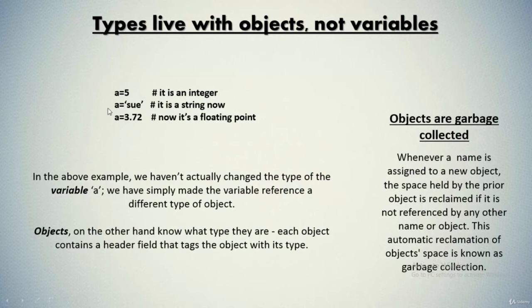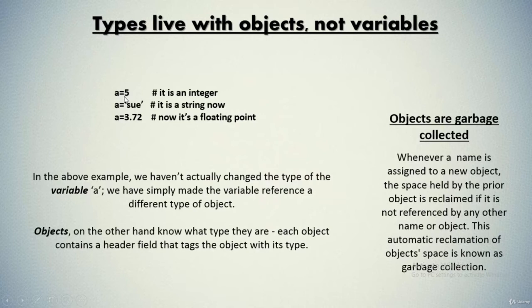How does garbage collection happen here? First we assign the value 5 to variable 'a', then we assign a string value to variable 'a'. As soon as we assign a different object to this variable, the prior object is automatically reclaimed and replaced by the newly created object — that is called garbage collection. The prior object works as garbage and is automatically collected in Python.